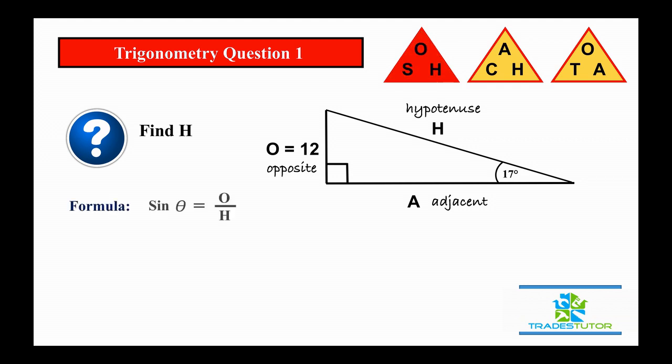And the formula there, sine of 17 degrees, is equal to the opposite over the hypotenuse. And this is just a relationship between the two sides, given that you have that angle of 17 degrees.